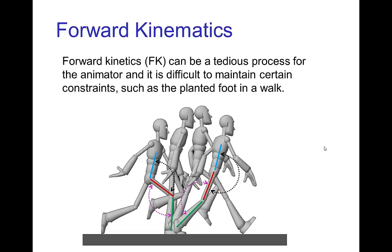A common example is a character that is walking, establishing the angles for the different joints like the hip and the knee frame by frame, while maintaining a planted foot so that the foot doesn't slide in an unnatural fashion — this motion is rather difficult with forward kinematics.